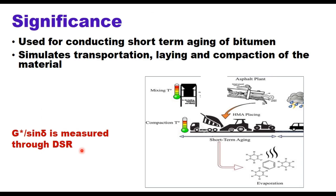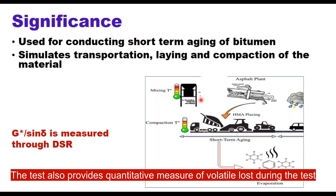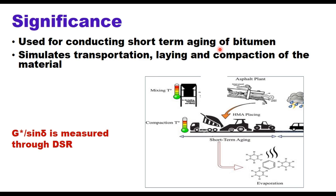The importance of this test is that it is used for conducting short-term aging of the bitumen. It simulates transportation, laying, and compaction of the material. When the bitumen is heated and mixed with aggregate, when it is transported to the site, laid and compacted, there is some kind of oxidation or hardening of the bitumen. This short-term aging of the binder simulates this process of heating, mixing, transporting, laying, and compaction. G*/sin(δ) is measured using dynamic shear rheometer.